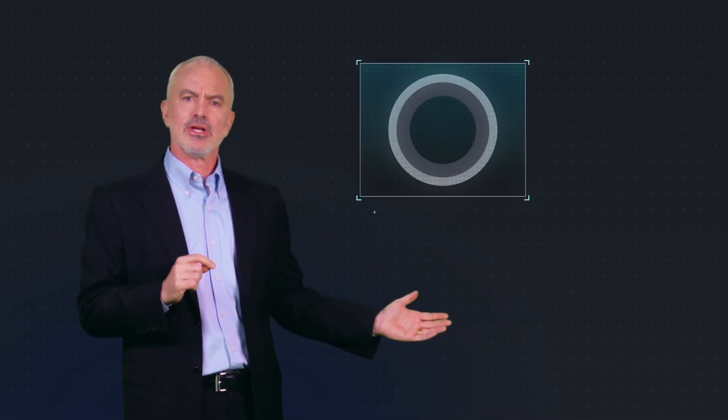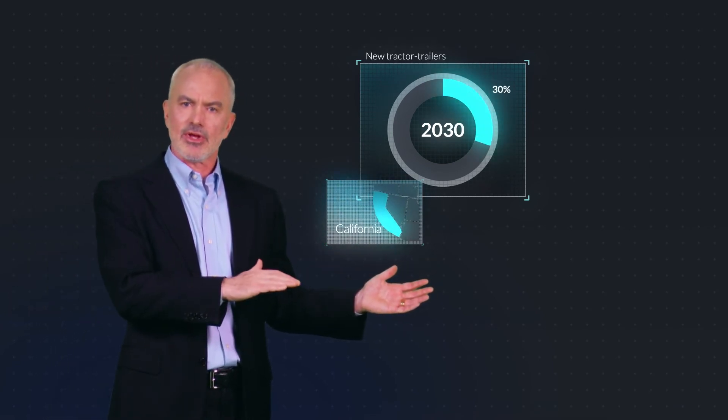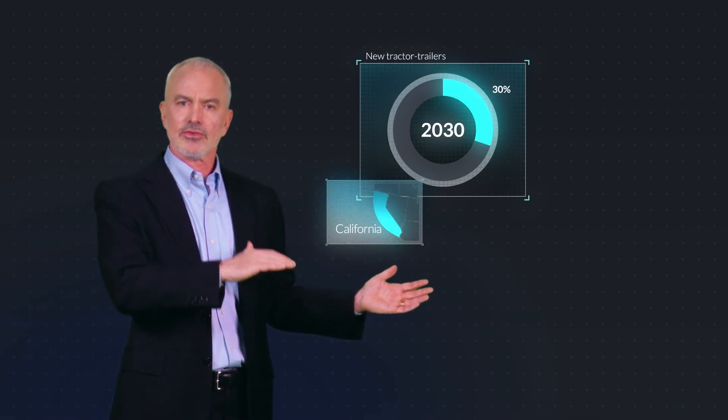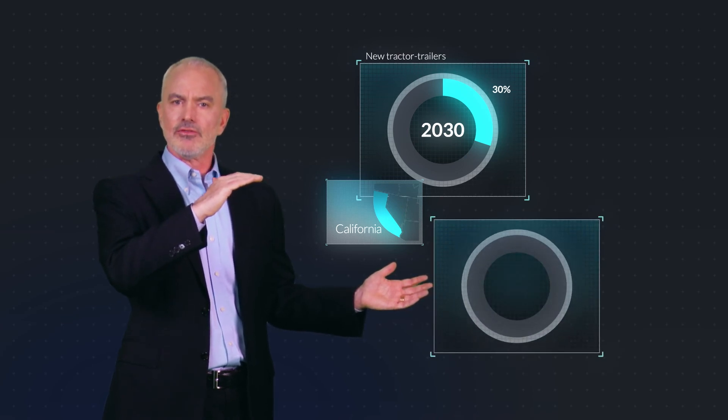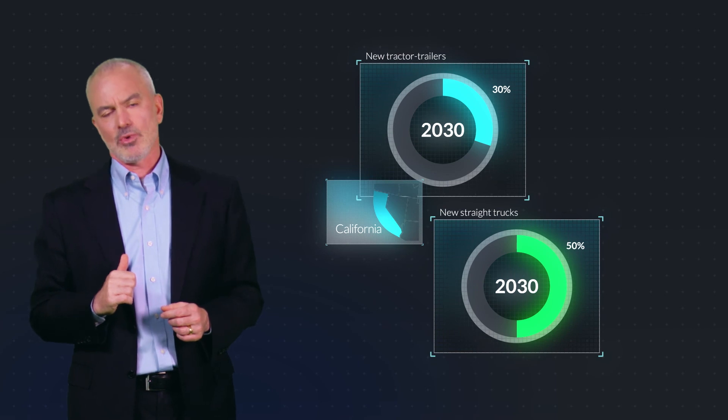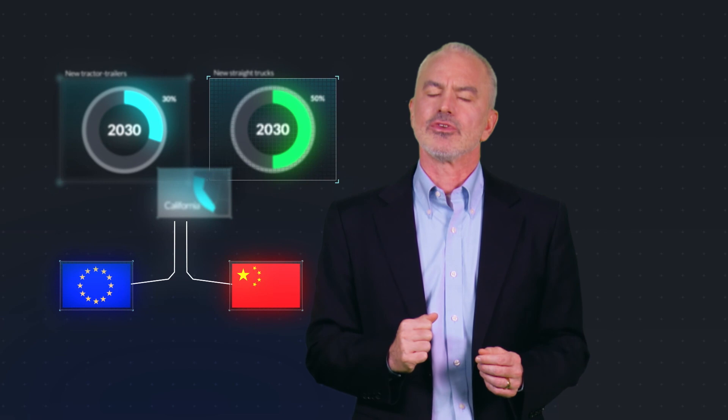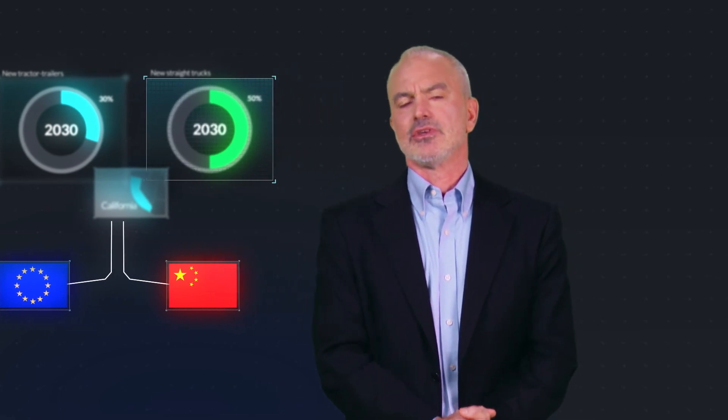As you can see from this chart, California has required truck manufacturers to sell 30% of new tractor trailers and 50% of new straight trucks as zero emission heavy-duty vehicles by 2030. The European Union and China are likely to follow California's lead with new policies in the next two years.